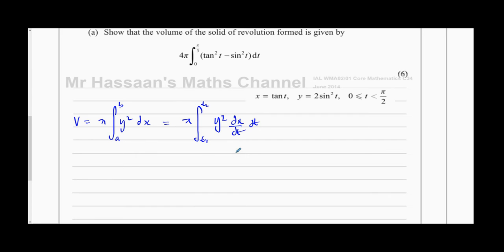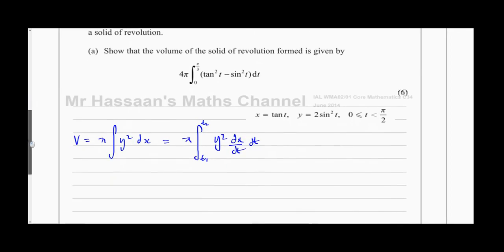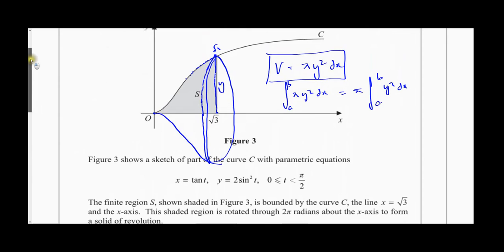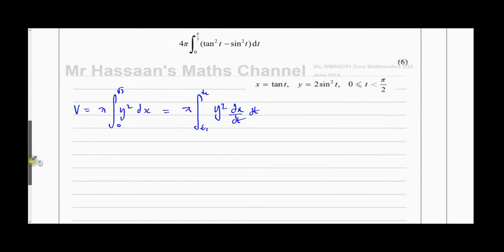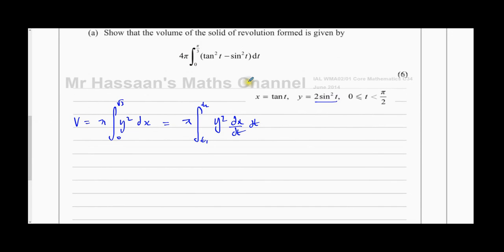This is actually the same thing as y squared with respect to x — the dt's cancel out. Now we're going to have everything in terms of t. The original limits in terms of x were 0 and root 3. We've got to change those limits in terms of t, write y in terms of t, multiply by dx/dt, and then integrate with respect to t. Hopefully when we've set this up it should match the target expression shown in the question.